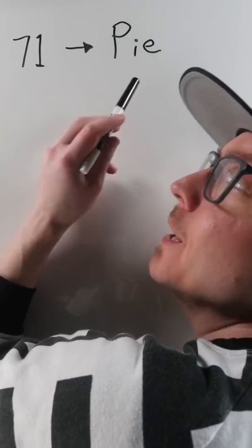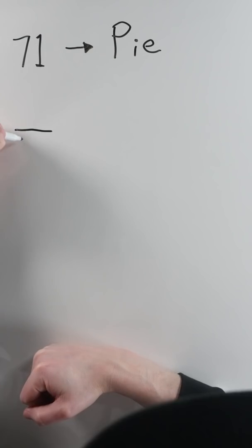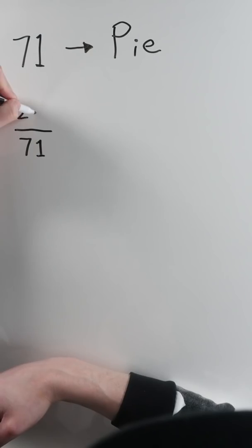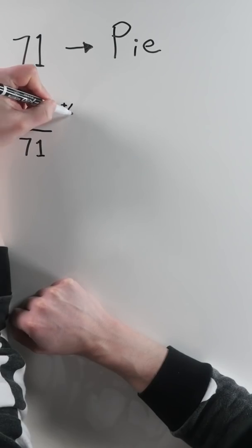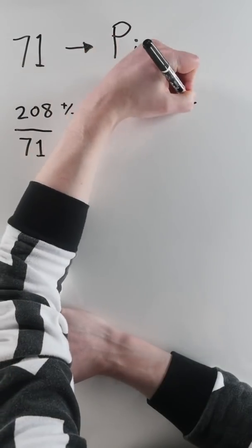Hey, I could take the prime number 71 and turn it into pi with an E. Check it out. If I start with 71 as the denominator in a fraction, and 208 as the numerator, then 208 plus or minus 15 over 71 gets me two mathematical constants.